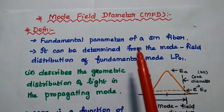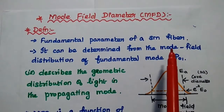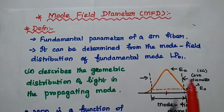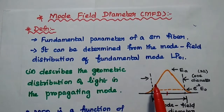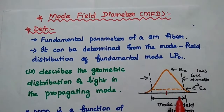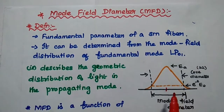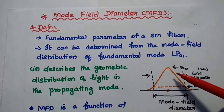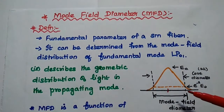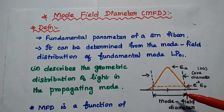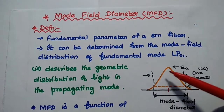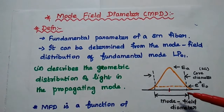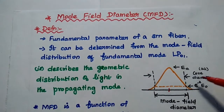The next parameter is mode field diameter, simply MFD. It is the fundamental parameter of a single mode fiber. It is mainly used to analyze the mode field distribution of the fundamental mode LP01 in single mode fiber — that is, to describe the geometric distribution of light in a single mode fiber. Considering a Gaussian distribution, the mode field diameter is given by the 1/e² width of the optical power.